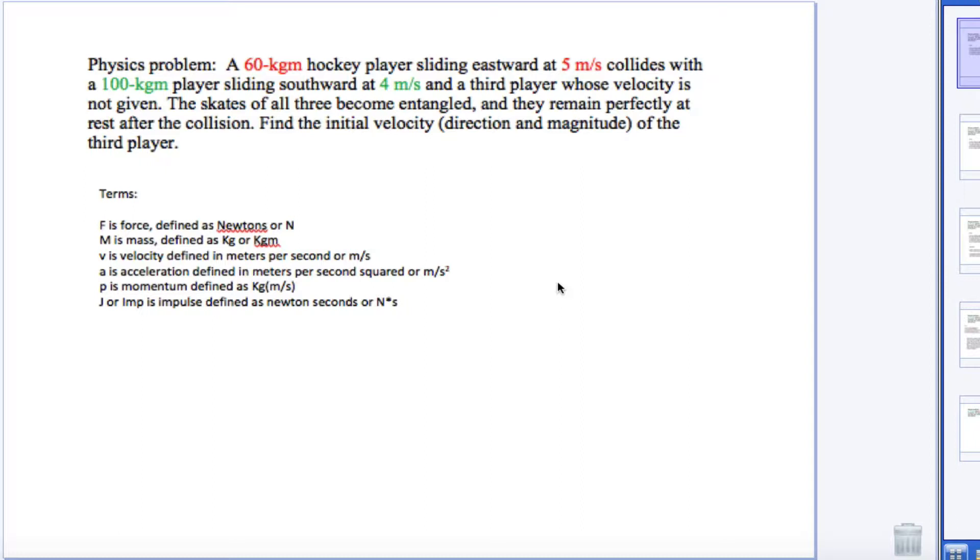We also have to use two less common terms. P is momentum, defined in kilograms times meters per second or mass times velocity. And J or impulse is defined as newton seconds or newton times seconds. So that is just some terms.